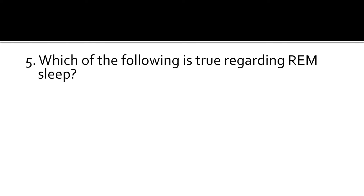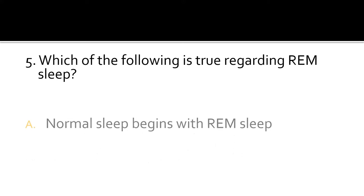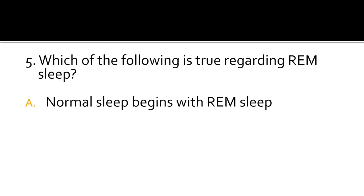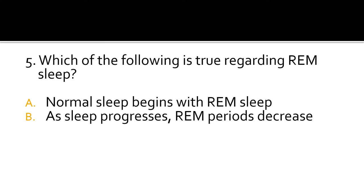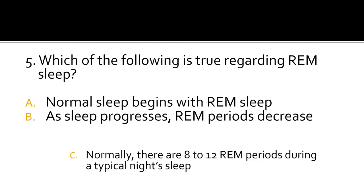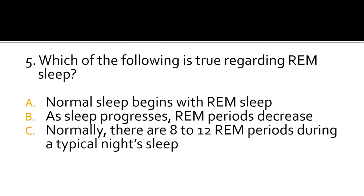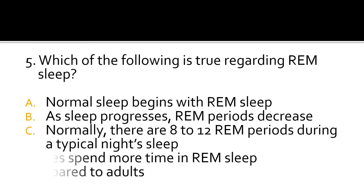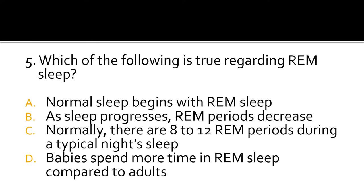Question 5. Which of the following is true regarding REM sleep? REM stands for rapid eye movement. Normal sleep begins with REM sleep. As sleep progresses, REM periods decrease. Normally there are 8 to 12 REM periods during a typical night's sleep. Babies spend more time in REM sleep compared to adults.